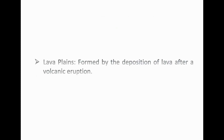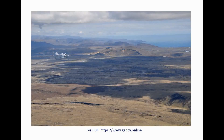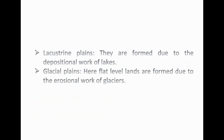Lava plains are formed by the deposition of lava after a volcanic eruption. Lacustrine plains are formed due to the depositional work of lakes. Glacial plains are flat-level lands formed due to the erosional work of glaciers.